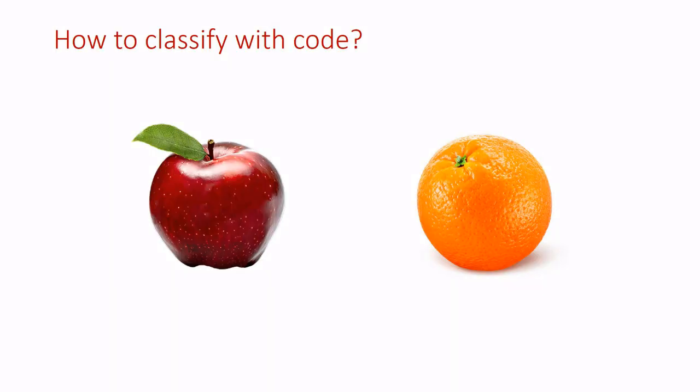Suppose that as a developer, we have a task classifying two images: apple and orange. How can we classify them? Color might be helpful. If red pixels are greater than orange pixels, then it's an apple. Otherwise, it's an orange.